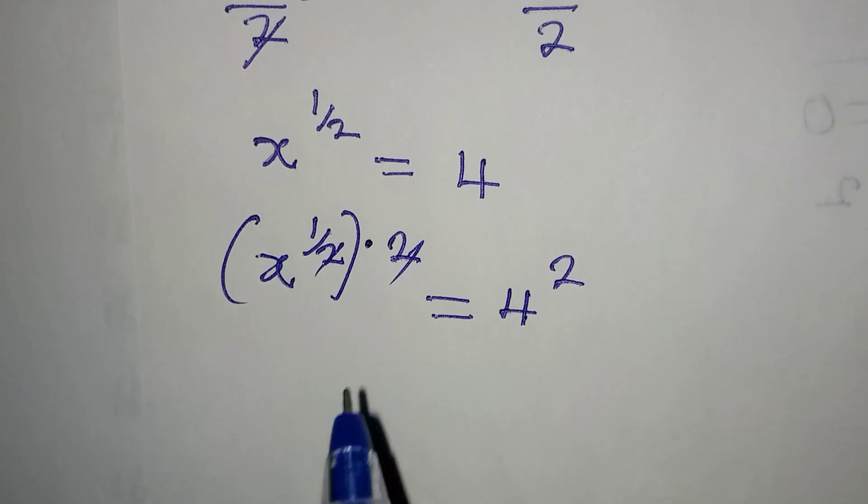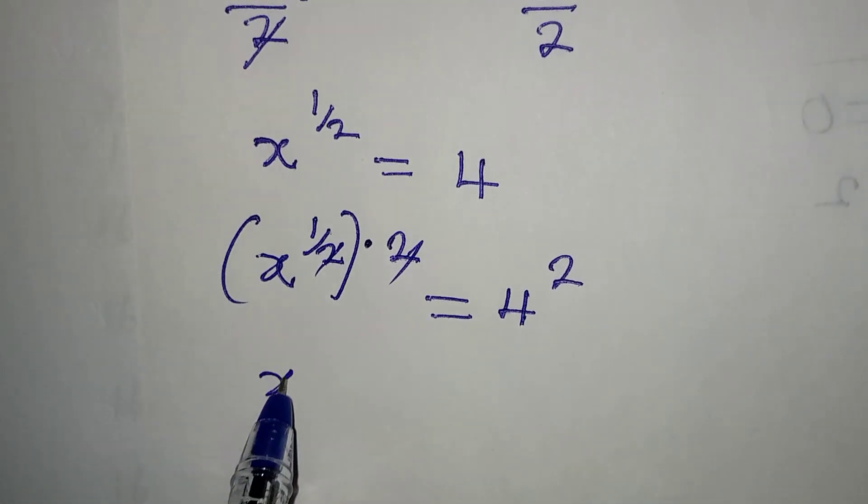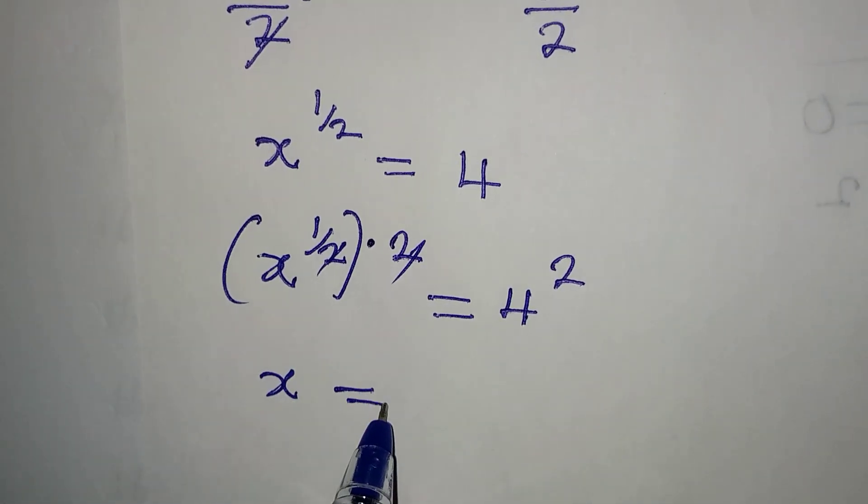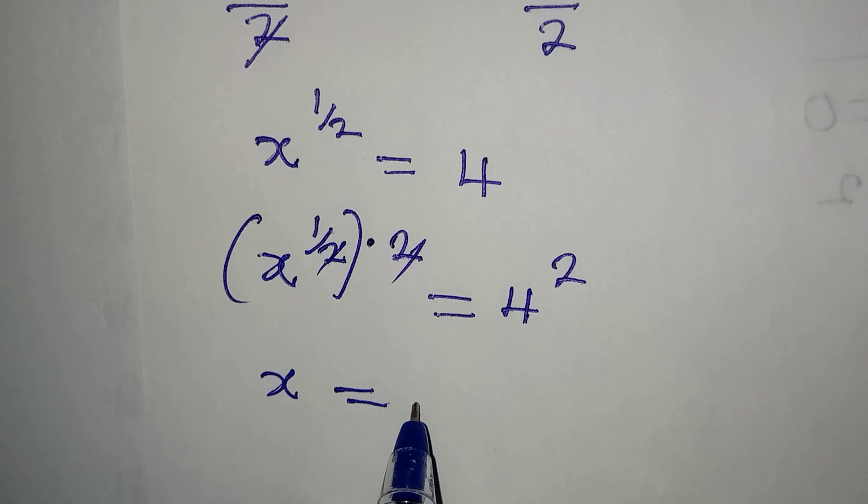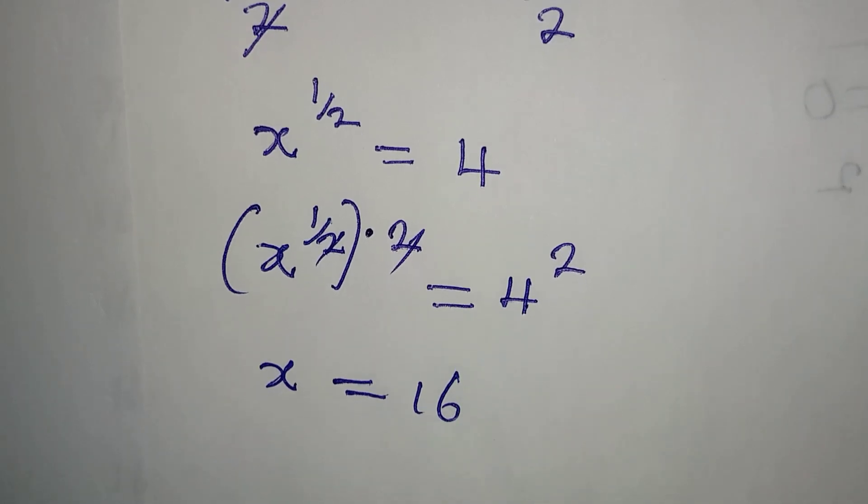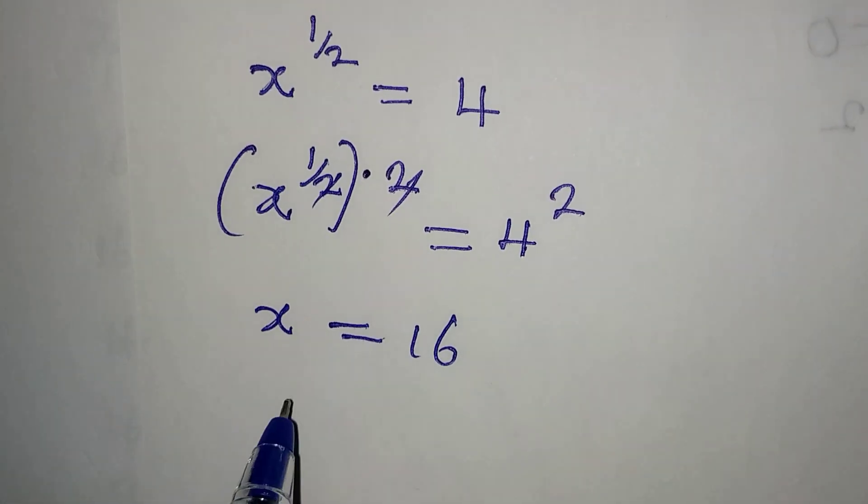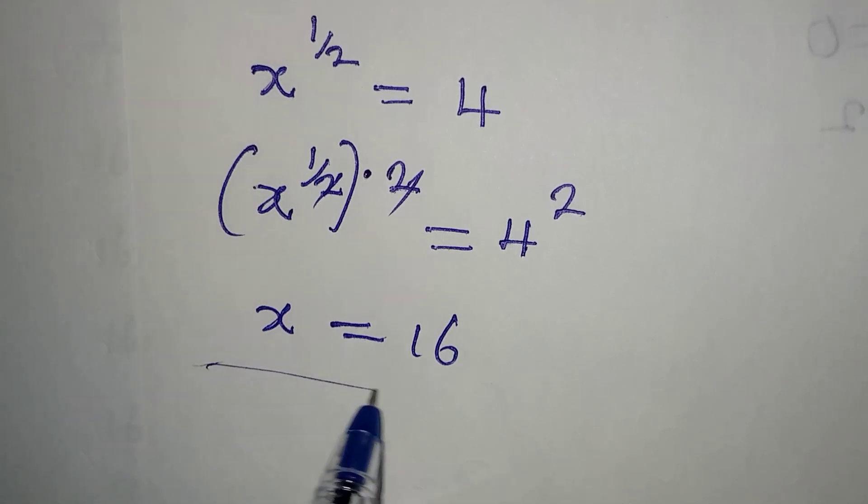This and this can cancel, right? And then x to the power of 1 is equal to 4 squared, which is 16. So this is what we are looking for. Now let's put this into the equation and check.